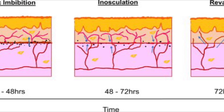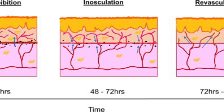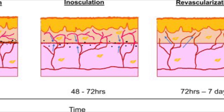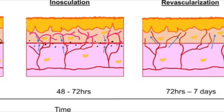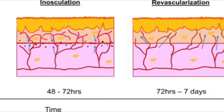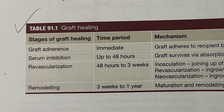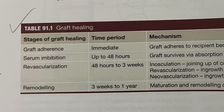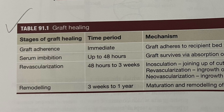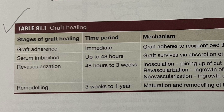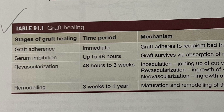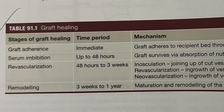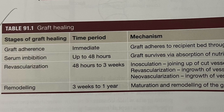Initially when the graft is applied, it becomes adhered to the recipient bed by the formation of an intervening layer of fibrin. Within 48 hours, the thin fibrin layer starts to break down and adhesion to the bed is maintained by the proliferation of fibroblasts and deposition of collagen. During this period of initial adherence, the skin graft survives through the passage of nutrients from the plasma leaking from the capillaries in the recipient bed. This phenomenon is known as serum imbibition.